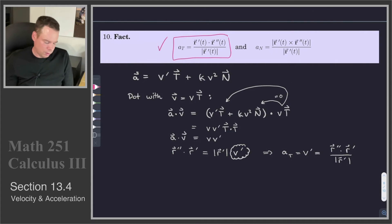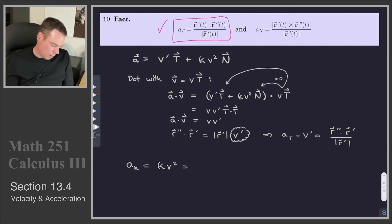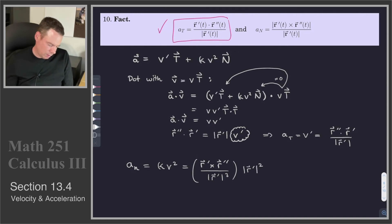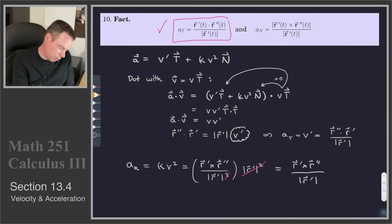For the normal acceleration, aN = κv². Using the curvature formula κ = |r' × r''| / |r'|³ and v = |r'|, we multiply: aN = (|r' × r''| / |r'|³) · |r'|². The two factors of |r'| cancel, leaving aN = |r' × r''| / |r'|. So we can compute both tangential and normal accelerations directly from r' and r'' using dot products and cross products.